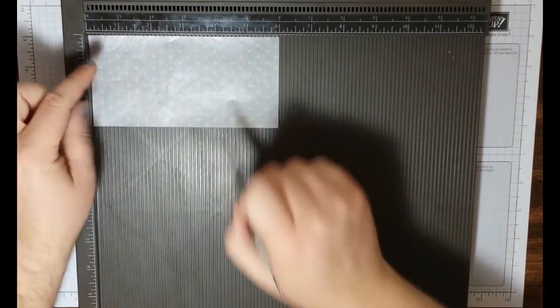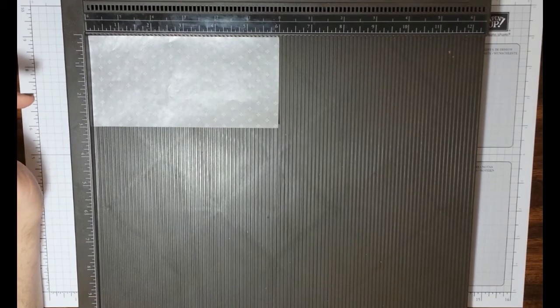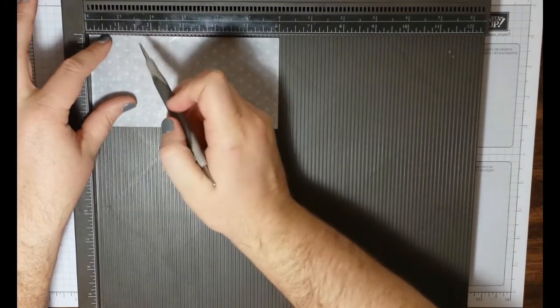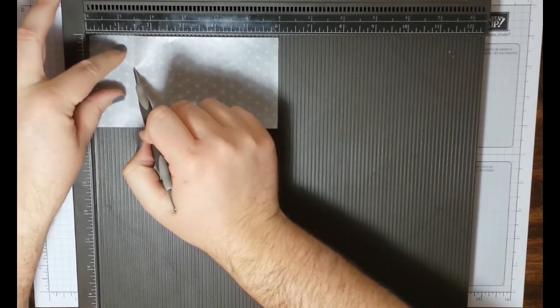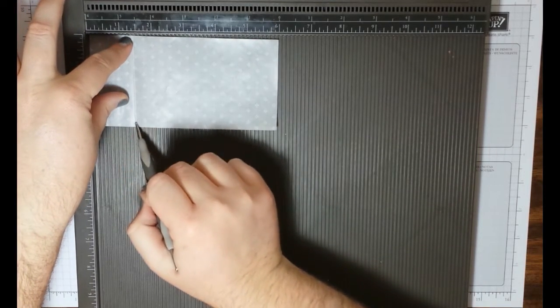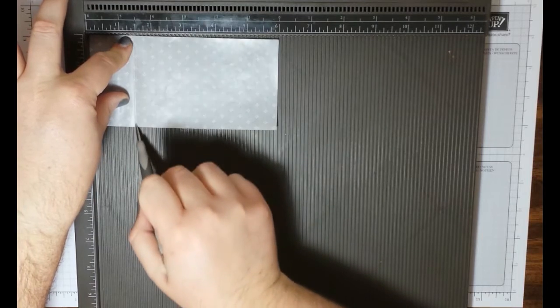All right, with the six inch side at the top, let me grab my directions, my scoring directions here. I want you to score at one and three eighths of an inch. And yes, this is kind of slidey. So that's the hardest part. One and three eighths of an inch.